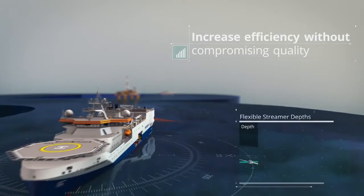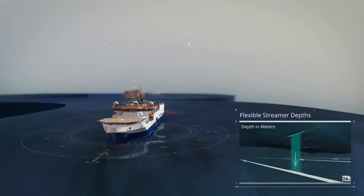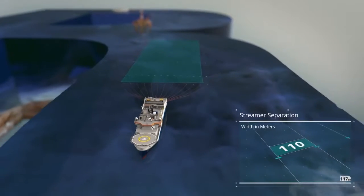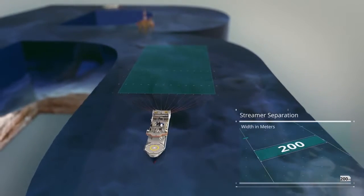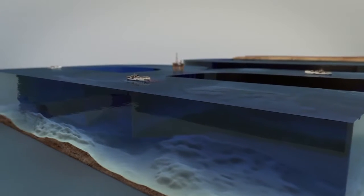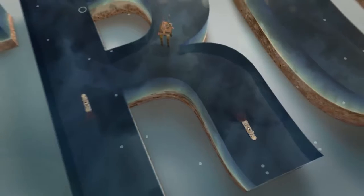What if you could also increase efficiency without compromising quality? Isometric streamers can be towed deeper and wider, increasing surface coverage without compromising data integrity, giving you the control to maximize the return on your seismic investment over the life of your field.